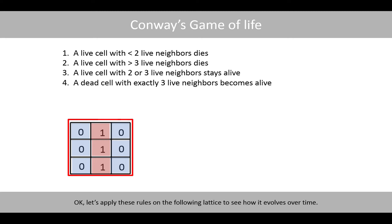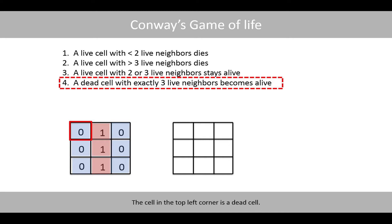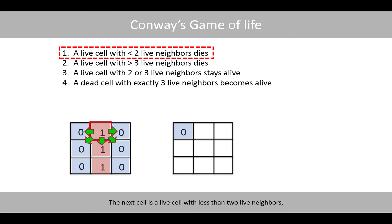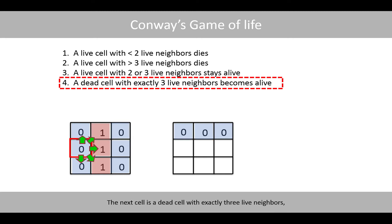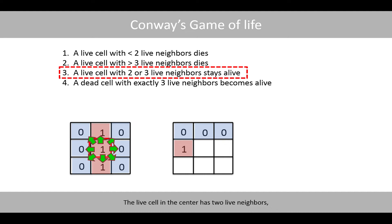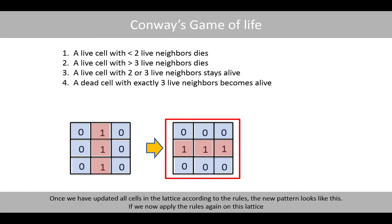Let's apply these rules on the following layers to see how it changes over time. The cell in the top left corner is a dead cell. Since it has only two live neighbors, it stays dead according to the fourth rule. The next cell is a live cell with less than two live neighbors, so it dies according to the first rule. The next cell is a dead cell with only two live neighbors, so it stays dead. The next cell is a dead cell with exactly three live neighbors, which means that it becomes alive according to rule number four. The live cell in the center has two live neighbors, which means that it stays alive according to the third rule. Once we have updated all cells in the lattice according to the rules, the new pattern looks like this.